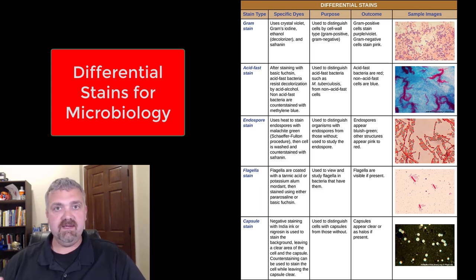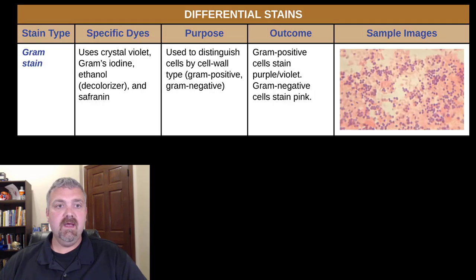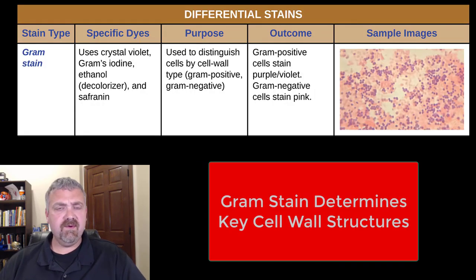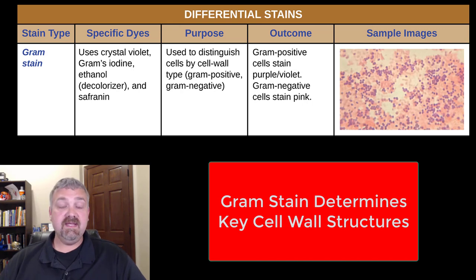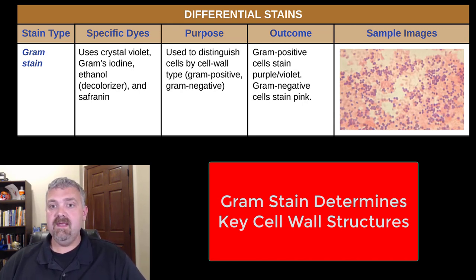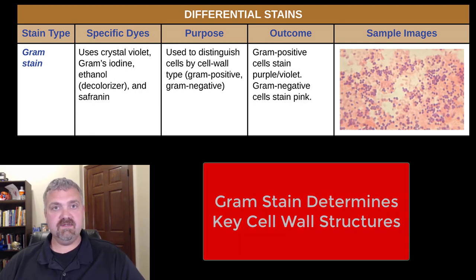I'm going to jump right in here and cover all of these. The first one is the gram stain. I did a separate video on the gram stain because it is so important, but the gram stain is generally the first stain you're going to use on any unknown organism because it will help you determine what kind of cell wall it has.